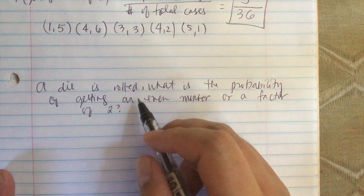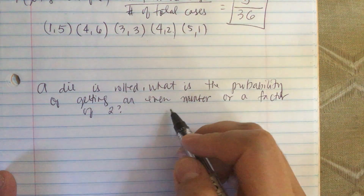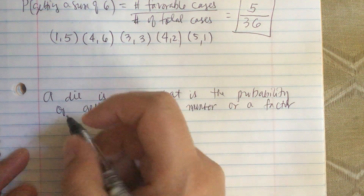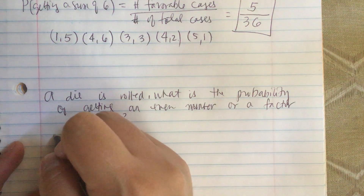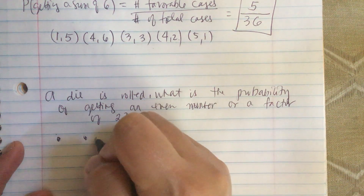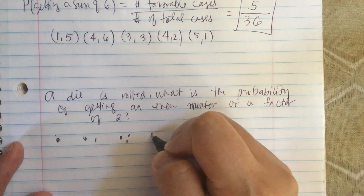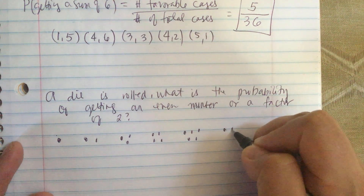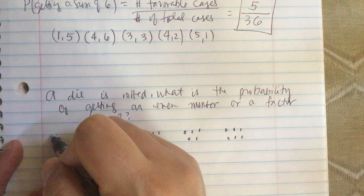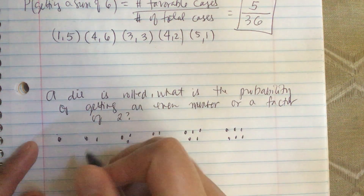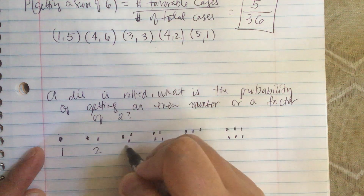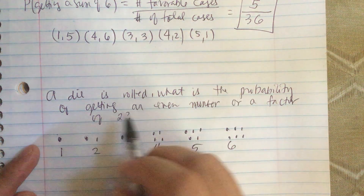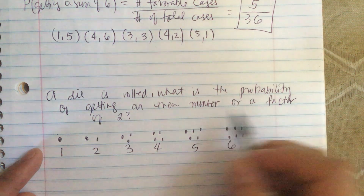A die is rolled. What is the probability of getting an even number or a factor of two? The numbers on the die are one dot, two dots, three dots, four dots, five dots, and six dots — so we have one, two, three, four, five, and six.